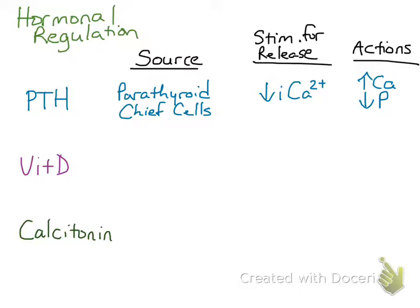There is a closely related hormone to PTH called PTHRP, or parathyroid hormone-related peptide, and the source of this hormone is various cells throughout the body. However, it normally has an autocrine or paracrine effect, so it's usually not produced in great enough amounts to enter the blood circulation, and in a normal state it's usually not detectable.